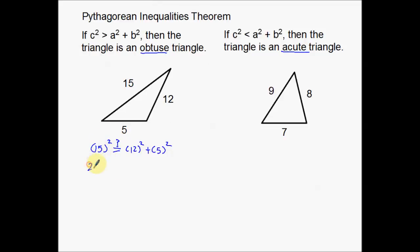15 squared, that's going to be 225. And then 12 squared is 144. 5 squared is 25. Add these together, you're going to get 169. Well, in fact, you kind of saw this coming. In fact, 225 is much bigger than 169.